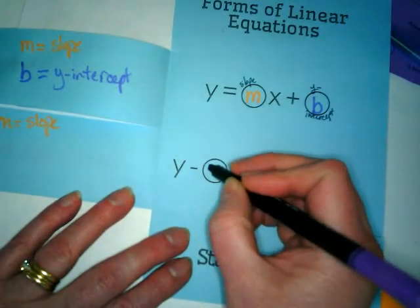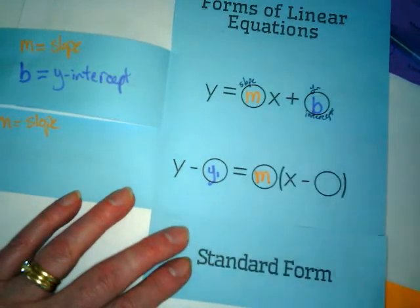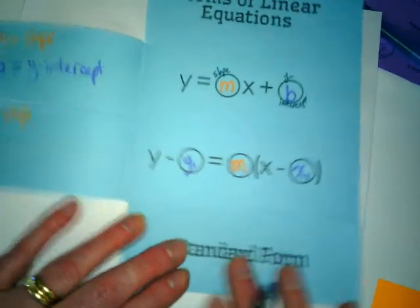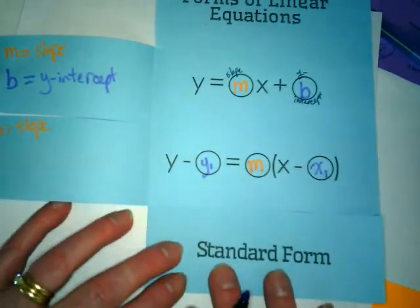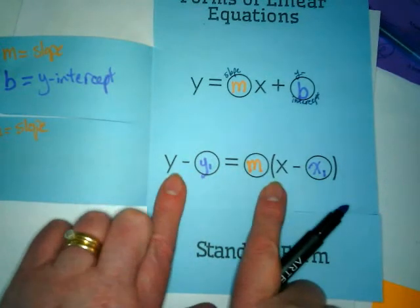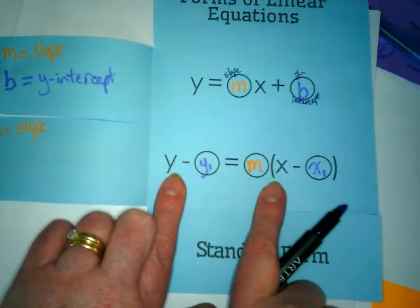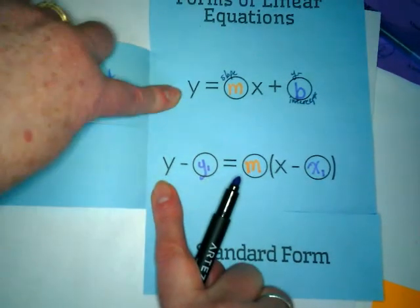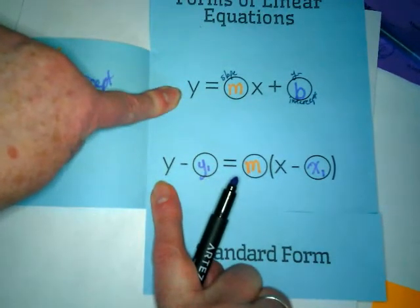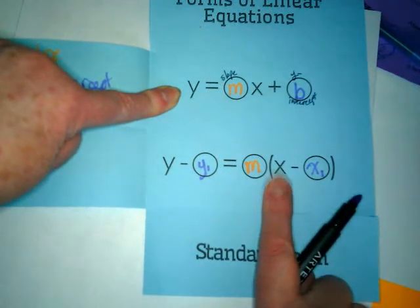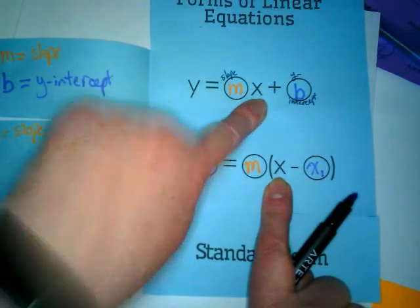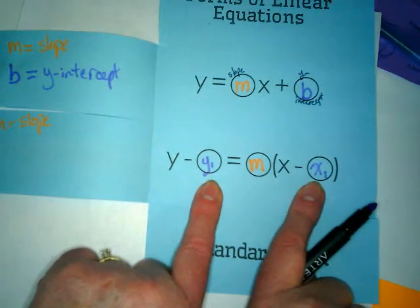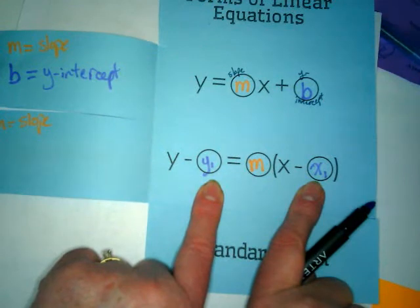This is a y with a little sub 1. And this is an x with a little sub 1. All that means is they are not like terms with this other x and y. This is just straight up y. This y is this y. And this is straight up x. This x is this x. These two are points or an x-y pair that could be or are a point on the graph.